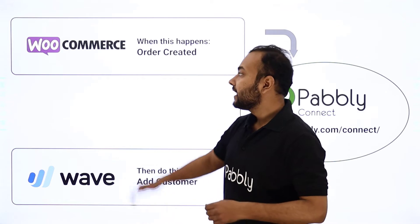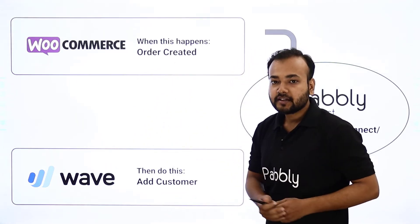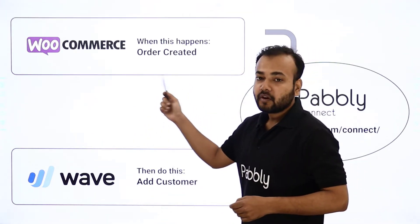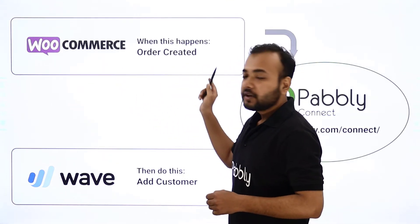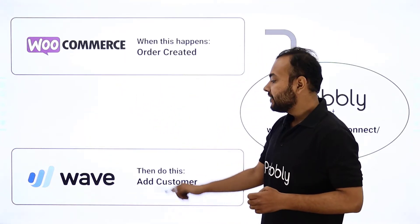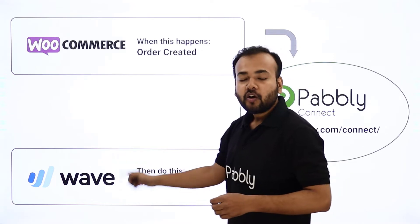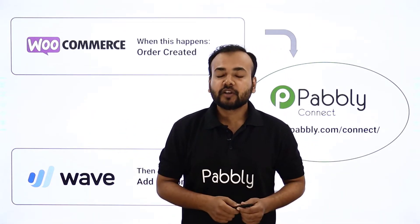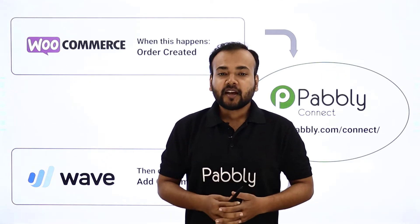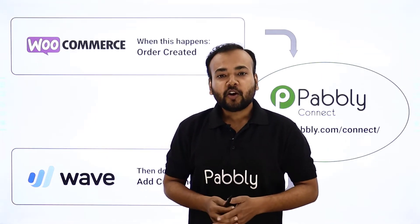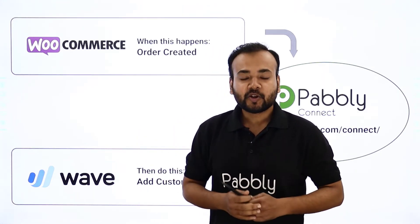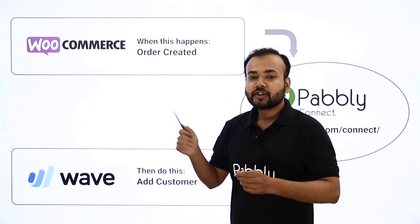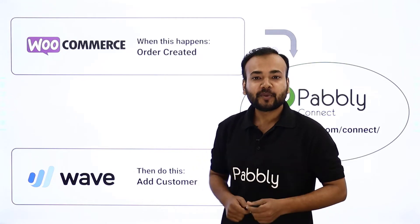What Pabbly Connect will do is connect these two applications together such that whenever you receive a new order from your e-commerce store, the person who is making the order will get saved in your CRM application automatically. The best part of making this automation is that you will not require any coding skills or programming knowledge, so any non-technical person can also make this automation. Now let me show you a demo on my screen of how this automation is going to work and how you can also make it.